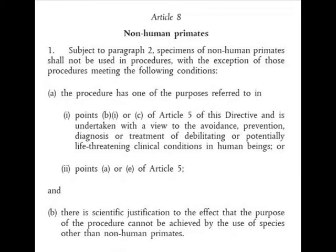A: the procedure has one of the purposes referred to in points B1 or C of Article 5 of this directive, and is undertaken with a view to the avoidance, prevention, diagnosis or treatment of debilitating or potentially life-threatening clinical conditions in human beings. They have taken animals and plants out of the original Article 5 there, but that still gives a pretty large scope to use non-human primates. Also permitted under point A or E of Article 5 — point A being basic research, and E being research aimed at the preservation of the species.